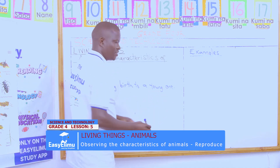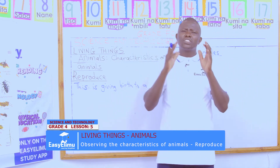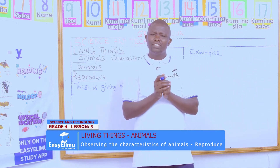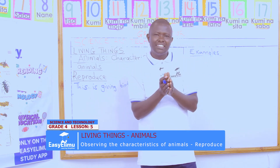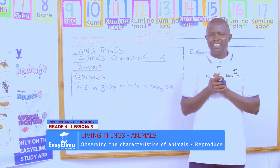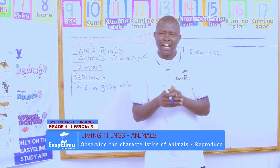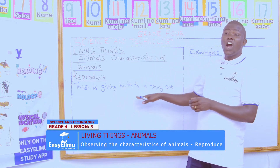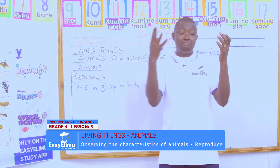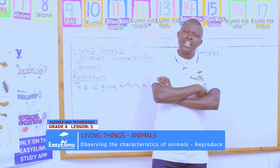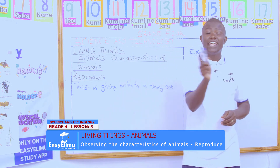I will ask a question. In pairs, can you answer me: do all animals give birth to a young one? Jen and Victor, that is your pair — can you tell me? They have said not all animals give birth to young ones. So if they do not give birth, what do they do? Even animals lay eggs.